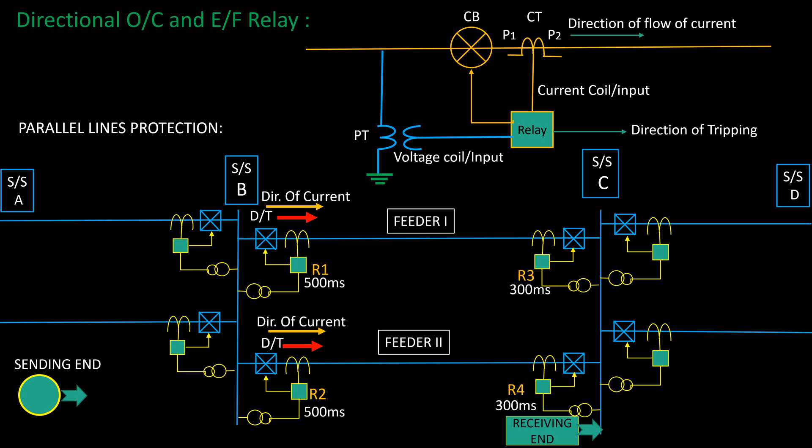Again, relays at substation C are set at a direction towards substation B. The direction of tripping of the relays R3 and R4 is in reverse direction with respect to flow of current from substation B.